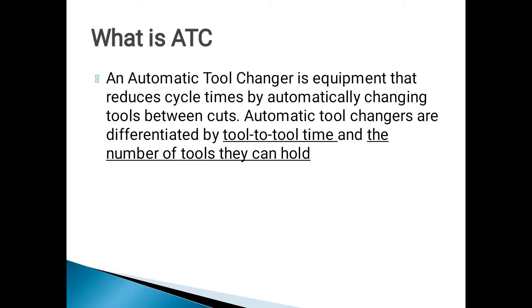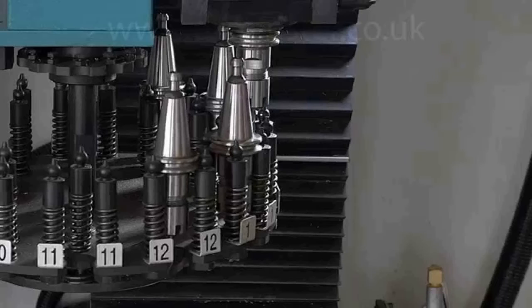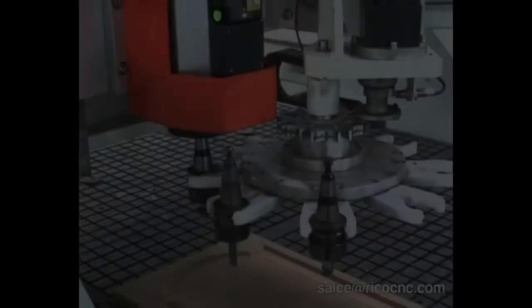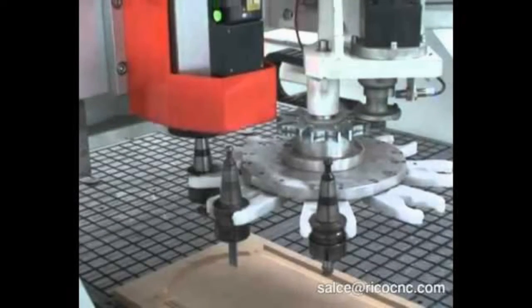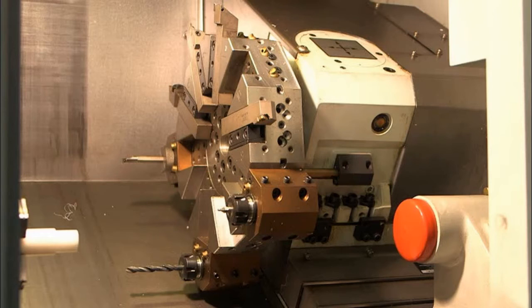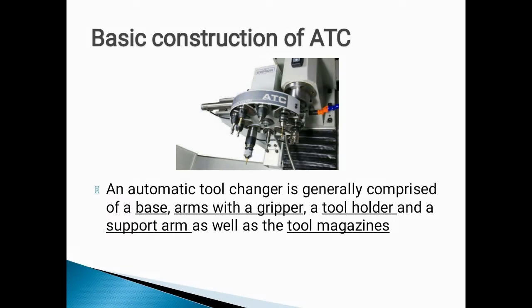An Automatic Tool Changer is equipment that reduces cycle times by automatically changing tools between the cuts. Automatic tool changers are differentiated by tool-to-tool time and the number of tools they can hold. A simple CNC machine will be made to work with a single tool, but more complex machines are capable of working with a larger number of tools. For a machine to use more tools, an ATC must be provided. The array of tools is stored within a magazine, which allows the machine to access a wider variety of tools without the need of an operator.